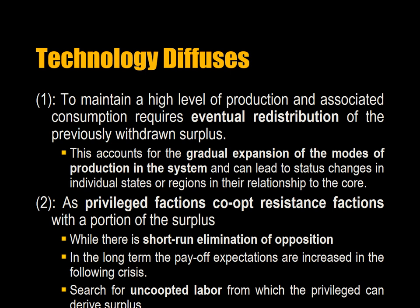The second phenomenon states that as privileged factions co-opt resistance factions with a portion of the surplus — meaning the wealthier increase the wages of the poor to get them invested in the system — while there is a short-run elimination of opposition, in the long term payoff expectations are increased in the following crisis. This creates a perpetual pressure to spread investment to poorer areas in search of cheaper labor, leading to the diffusion of technology. So the US brought China into the World Trade Organization so that China could ultimately manufacture the goods that the US found too expensive to manufacture within itself.